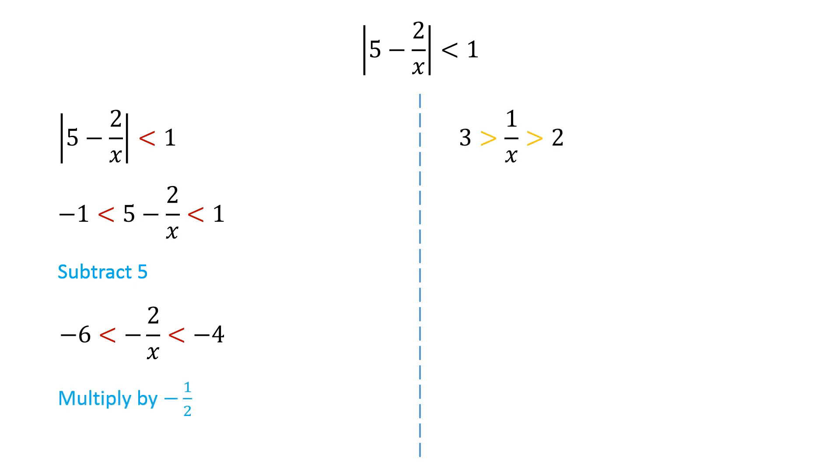Multiplying this inequality by negative 1 half we get, 1 over x is less than 3 and greater than 2. Note that multiplying by a negative number reverses the inequality.